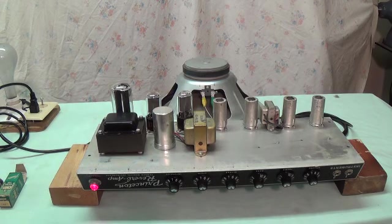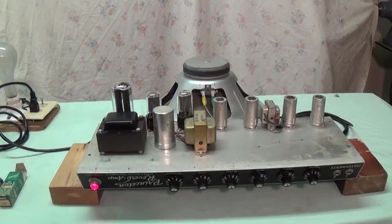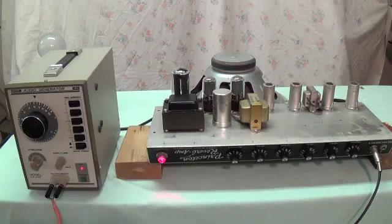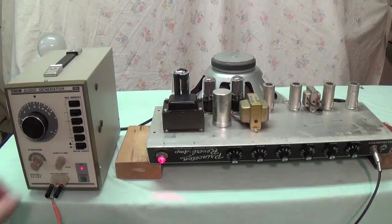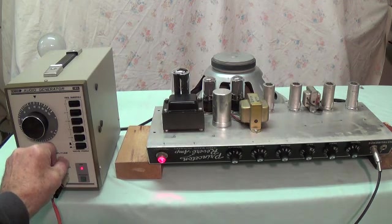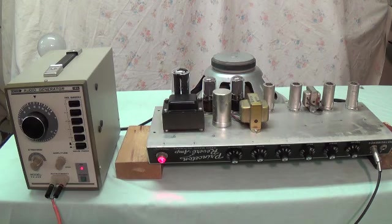So, first, let's see the difference between the 60 and 120 cycle hum, and then let's talk about what's causing this. Now, with the help of a signal generator, let's hear the difference between 60 cycle and 120 cycle hum. This is 60 cycle. It's exactly the same as what we heard from that tube.